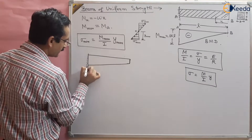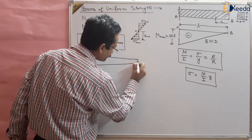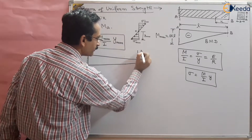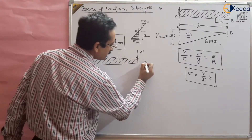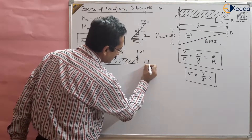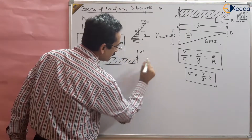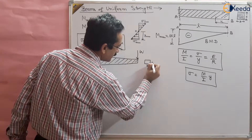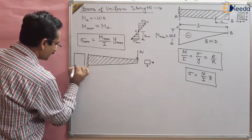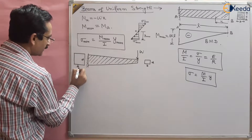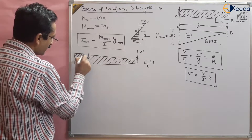At the fixed end, the width is higher, and at the free end, the width is lower. We can apply the load W at the free end of this varying cross-section beam. At any given point, the cross-section — width B and depth D — is different. The cross-section area is regularly varying and becomes a variable cross-section area beam.